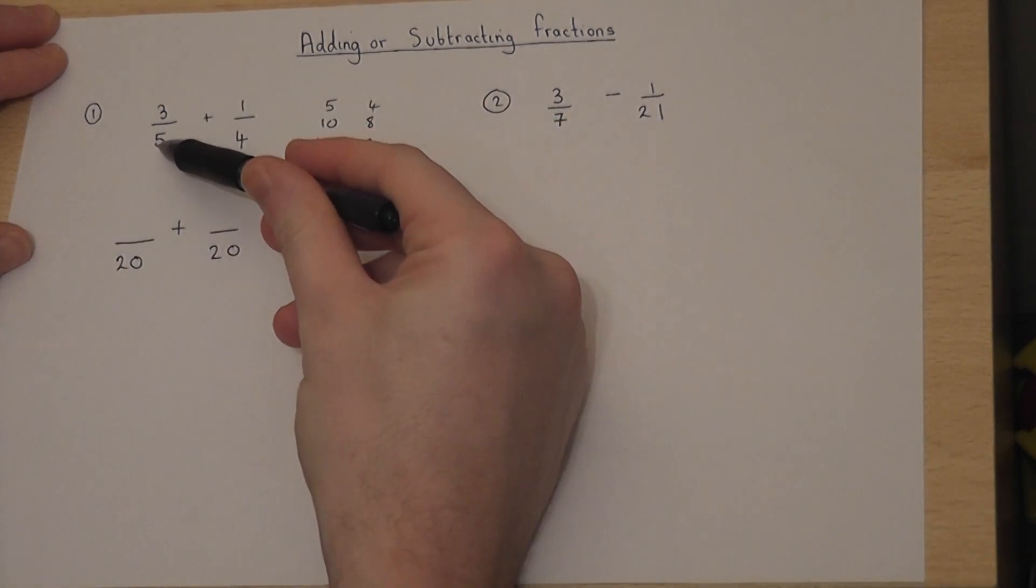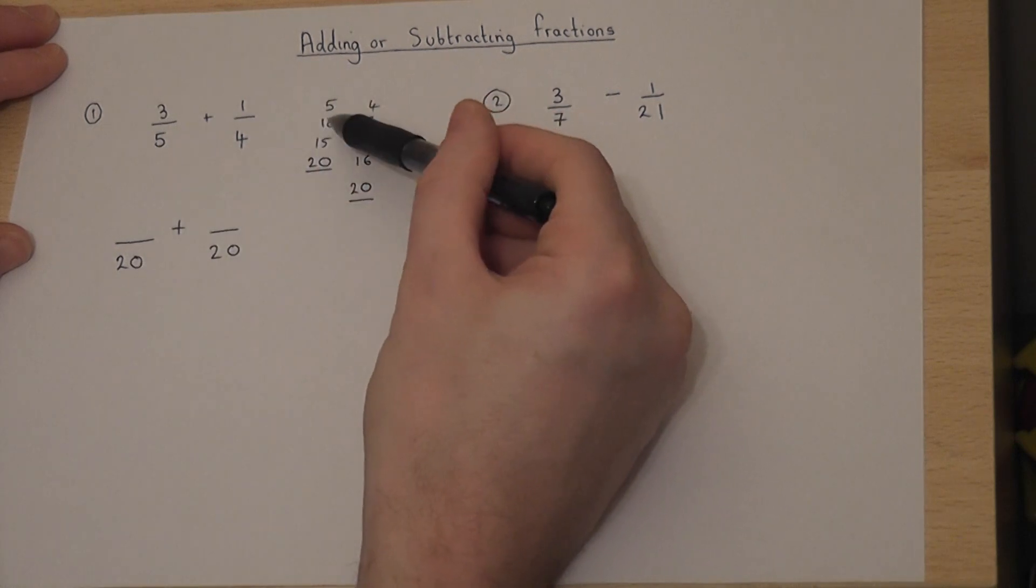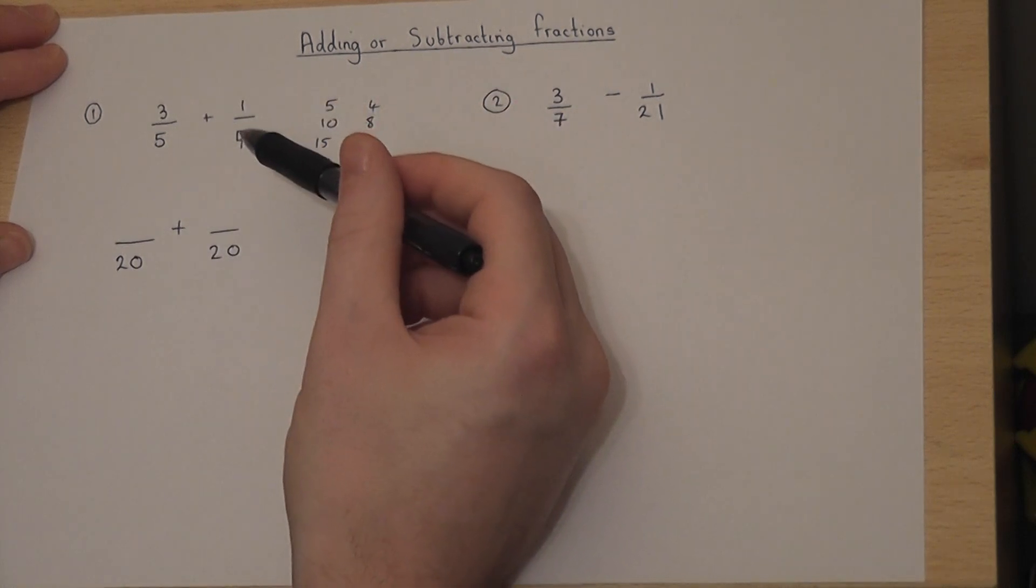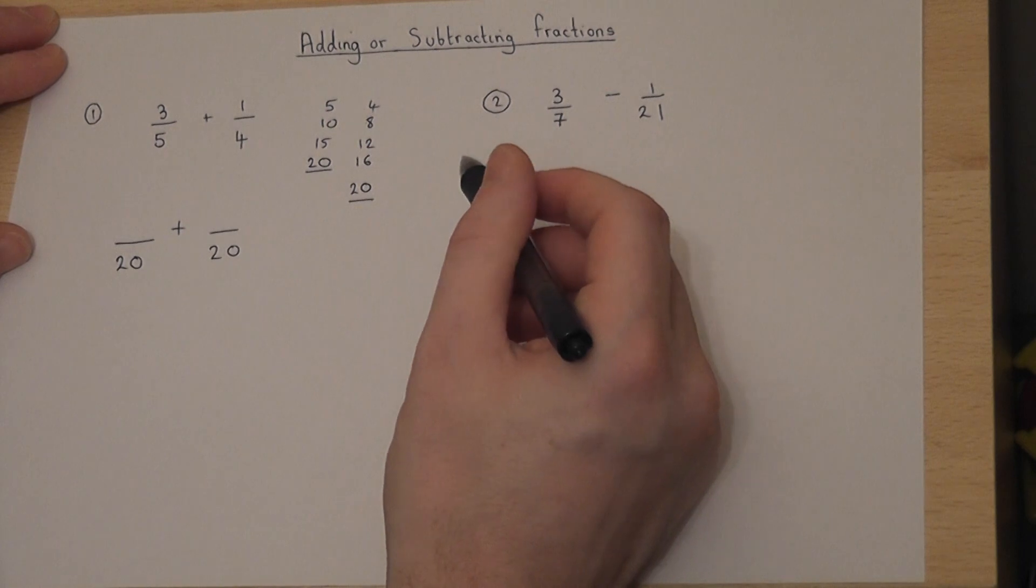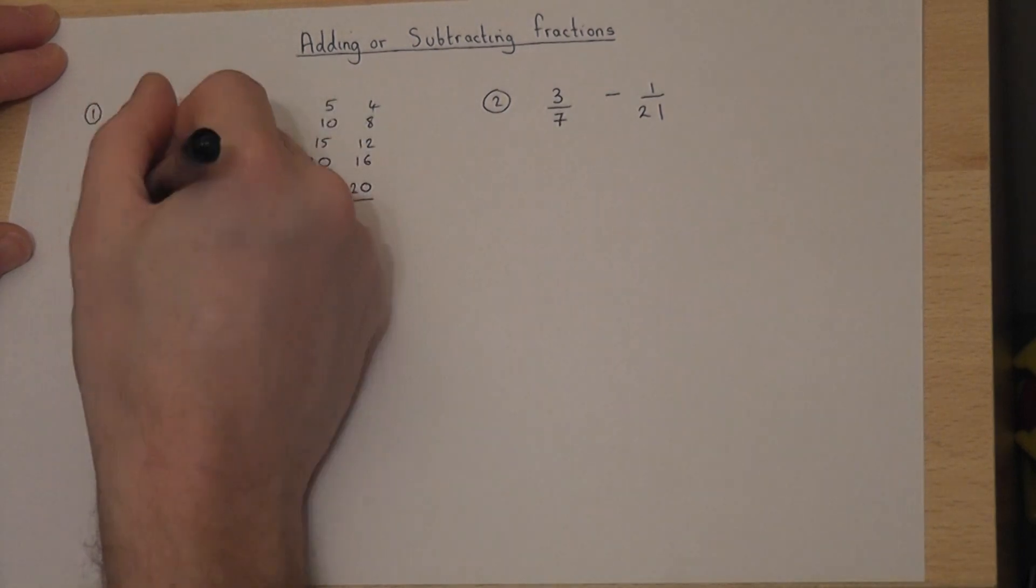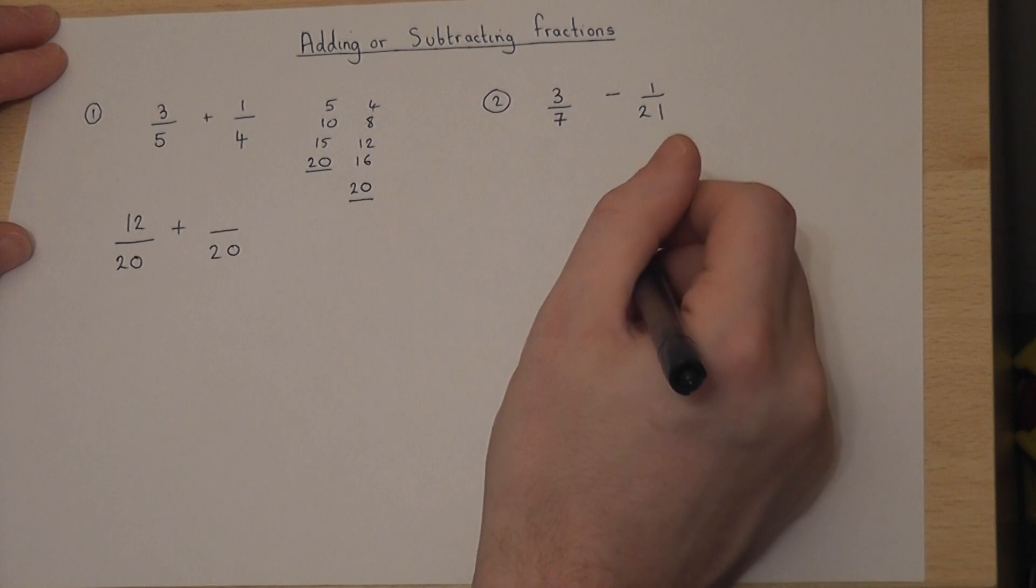However, this has been multiplied by 4 (5, 10, 15, 20), so I must multiply the top by 4 as well to keep the fractions equivalent. Multiplying by 4, I get 12 twentieths.